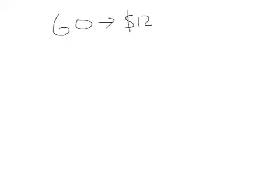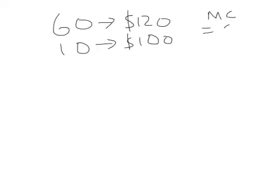Let's now look at a slightly different example. We still have 70 people, each interested in buying one unit of a product like a mobile phone. This time, 60 people are willing to pay up to but no more than $120 each, and 10 people are willing to pay up to but no more than $100 each. The marginal cost of an item is still $50.